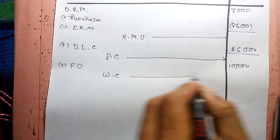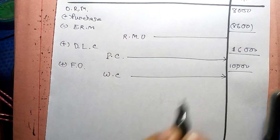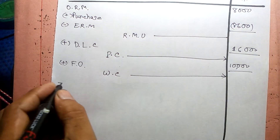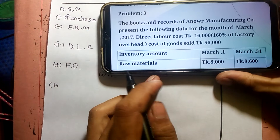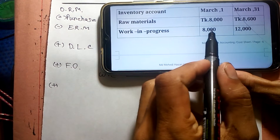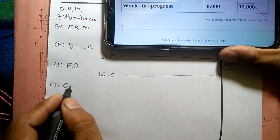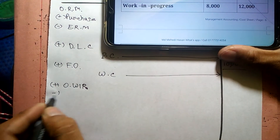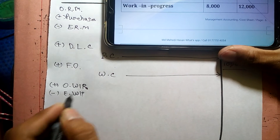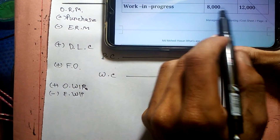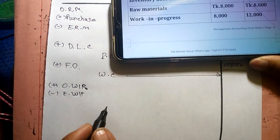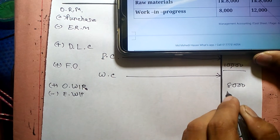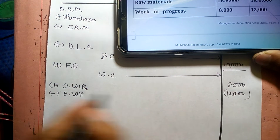Now we arrive at the works cost. The works cost is calculated, and then we adjust for opening and closing work in process. The opening work in process and the ending work in process figures are given — the ending work in process is noted as baro-hazard, and the opening work in process is also given.